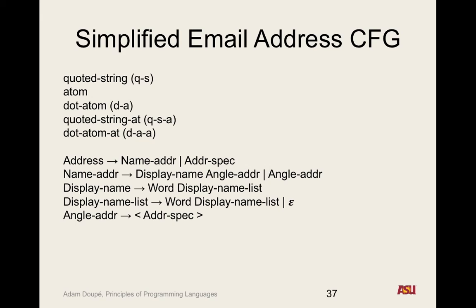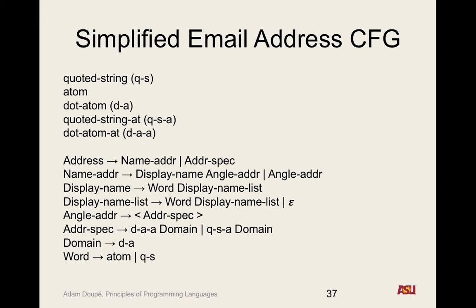An angle-address is a left angle bracket followed by an address specification followed by a right angle bracket. An address specification is either a dot-atom-at followed by a domain, or a quoted-string-at followed by a domain. A domain is just a dot-atom, and a word is either an atom or a quoted string.